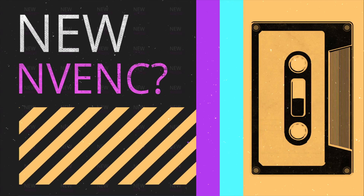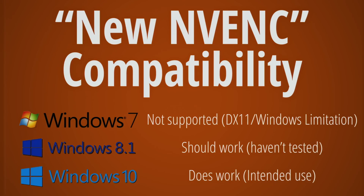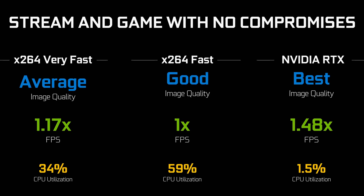Let's quickly discuss the new NVENC, or NVIDIA's GPU encoder, and how that compares to your other encoding options. Traditionally, the recommendation has been to use x264 software encoding for livestreaming as it looked better at lower bitrates, and NVENC for recording since it looks just fine at high bitrates. But as of OBS version 23, my recommendation has changed. For most people running a GTX 1060 or newer graphics card, using NVENC to encode for both streaming and recording is the way to go.